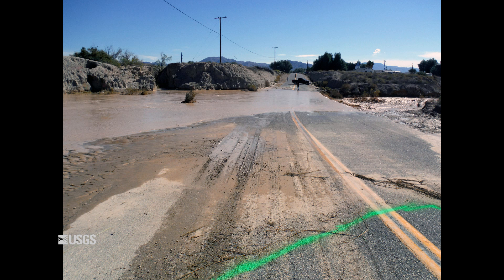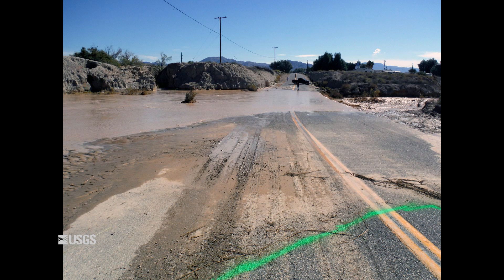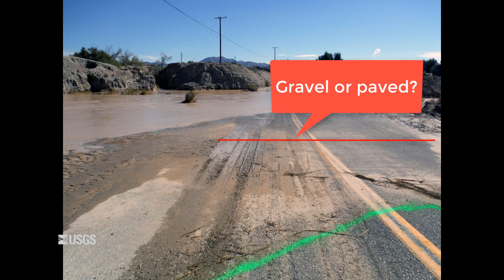When you survey for a road overflow indirect measurement, you will need to survey the following items: one, high watermark profiles through the entire reach; two, an approach cross section; and three, a cross section on the crest of the road. In addition, you'll also want to record the width of the road and whether the road is gravel or paved. Don't forget to take pictures during the survey.